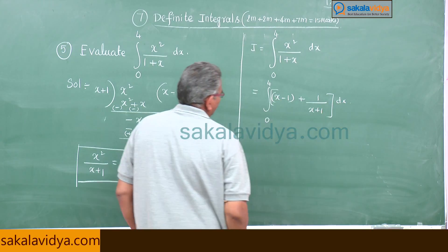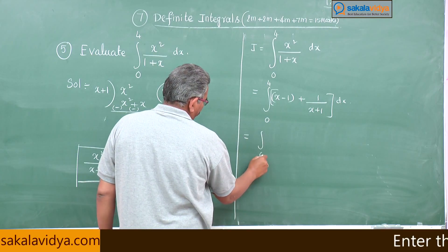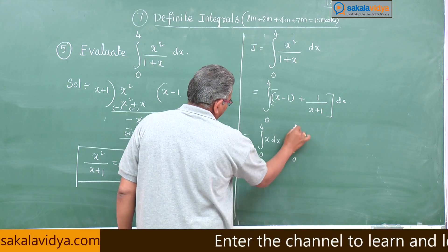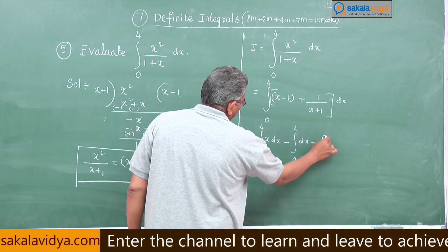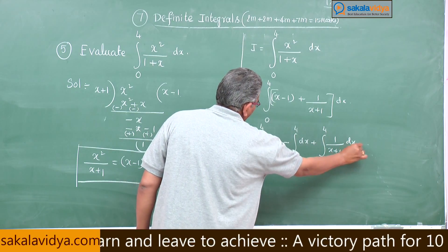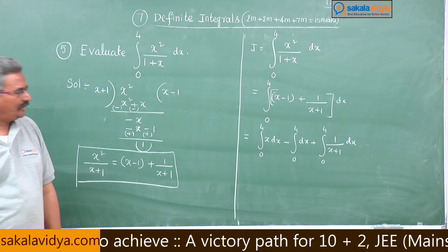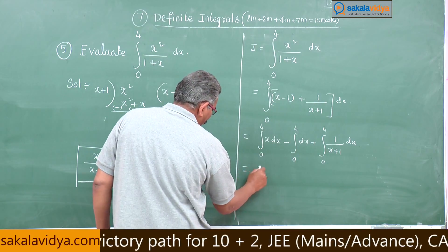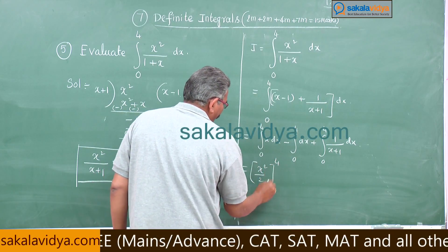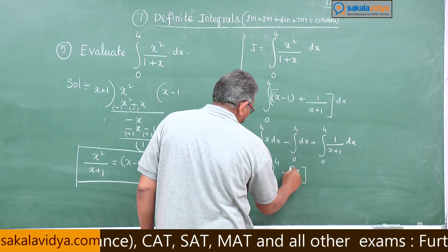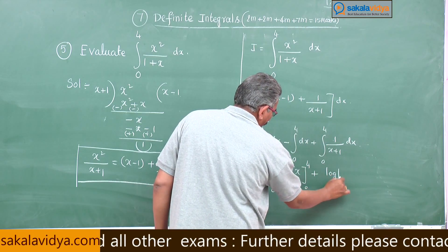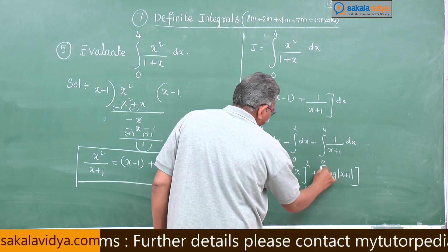Separating the integrals: integral 0 to 4 of x dx, minus integral 0 to 4 dx, plus integral 0 to 4 of 1 by (x plus 1) dx. These evaluate to x squared by 2 with limits 0 to 4, minus x with limits 0 to 4, plus log mod(x plus 1) with limits 0 to 4.